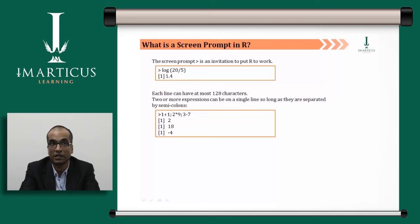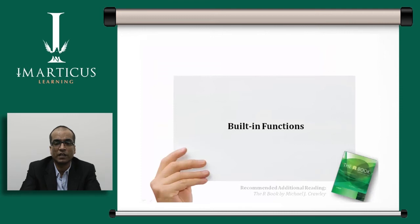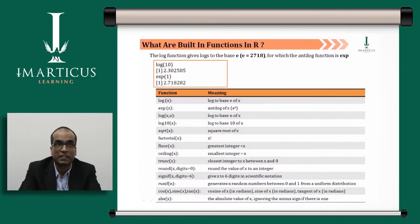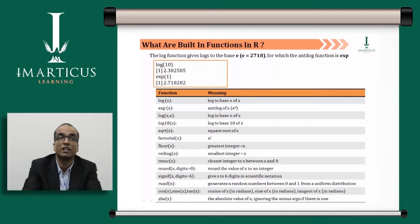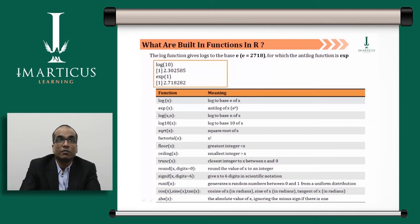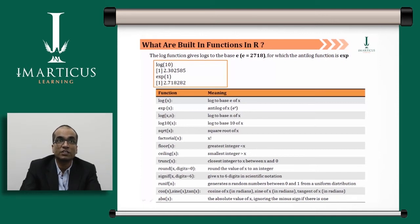Now let's look at some built-in functions in R. The log() function computes the natural logarithm to base e — for example, log(10) returns 2.302585. For exponential, you use exp(), so exp(1) returns 2.7182. The log(x) function computes log to base e of x, and exp(x) computes the anti-log, i.e., e raised to x.